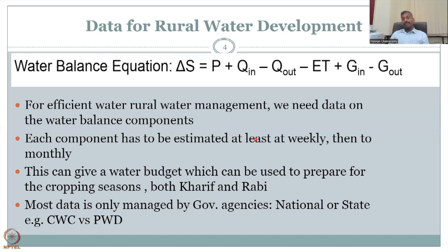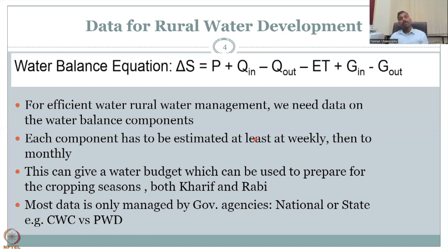However, data is mostly managed by government agencies at national or state level — for example, CWC (Central Water Commission) and PWD (Public Works Department) for water boards, such as in Tamil Nadu. In Tamil Nadu there are two agencies monitoring this data. They may or may not share data with each other, which leads to a lot of duplicates and data issues.